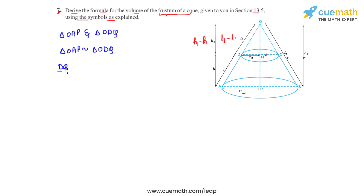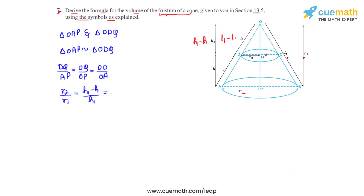Therefore DQ by AP equals OQ by OP, and that equals OD by OA. Substituting the lengths from the figure: DQ is R2, so we get R2 by R1 equals (H1 minus H) divided by H1, which equals (L1 minus L) divided by L1. Simplifying, R2 by R1 equals 1 minus H by H1, and that equals 1 minus L by L1.